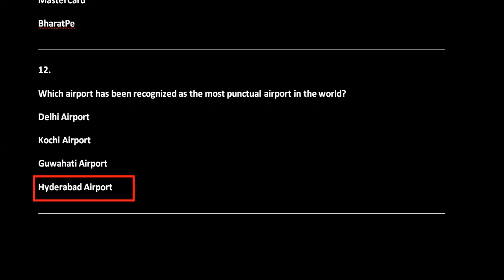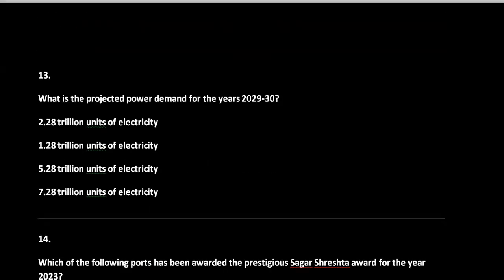Question 13: What is the projected power demand for the year 2029-30? Options are 2.28 trillion units, 1.28 trillion units, 5.28 trillion units, and 7.28 trillion units of electricity. The correct answer is option A, that is 2.28 trillion units of electricity.